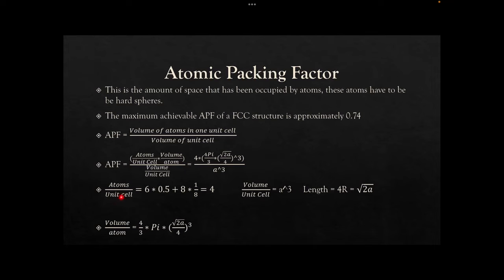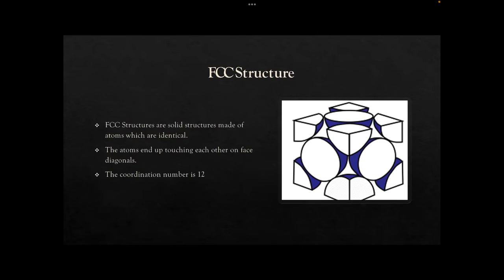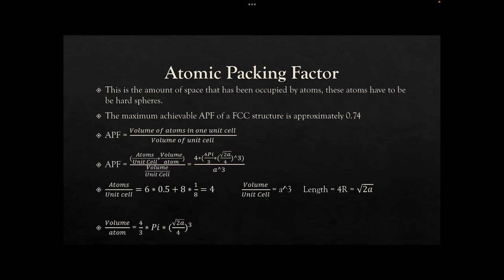To find the number of atoms in a unit cell: six times one half plus eight times one eighth. The reason is you have six half spheres, one for each face, so that's six times one half. Then you have eight one-eighth atoms at the vertices. That's the other half of the equation.